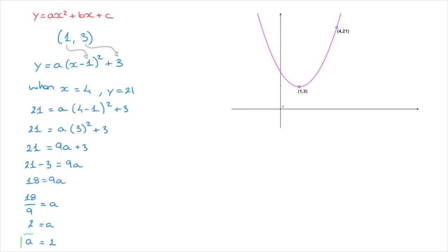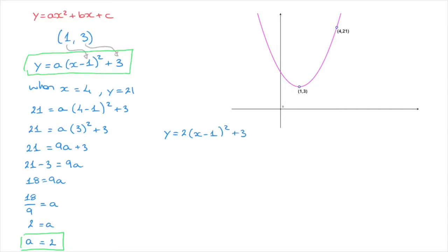We now know the value of the coefficient a. Combining this result with the vertex form, we can write this parabola's equation in its vertex form: y equals 2 times x minus 1 squared plus 3. This is the vertex form of this parabola's equation.